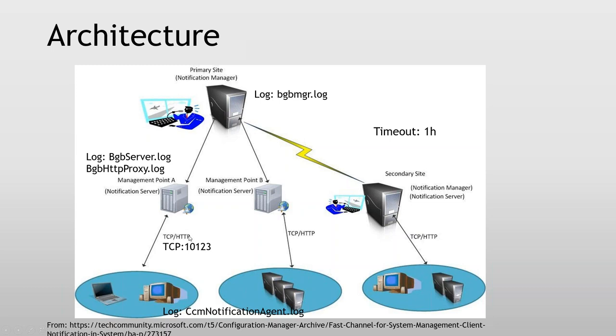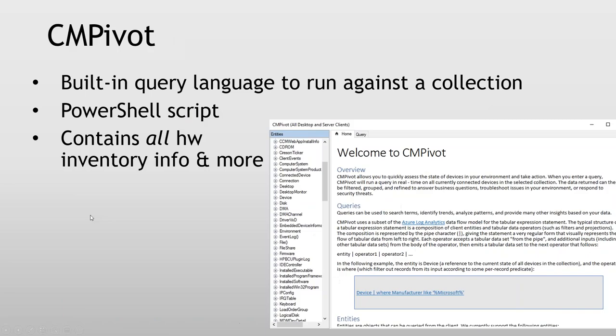CMPivot uses the same way — it's a built-in query language to run against the collection with PowerShell scripts. CMPivot contains all hardware inventory and more. CMPivot is one of the least used new features as well, because this is not just a feature for client admins. That's why I've been pushing and trying to create user voice items — that we should have CMPivot standalone, which we have now. Because I think CMPivot can be used by the security team as well. In some scenarios they have very expensive products doing similar things, or they are lacking that kind of tool. Now we can do CMPivot standalone installation — it's in preview in 1906. We can actually do standalone installation of CMPivot, and then they can run that without having the SCCM admin console installed.